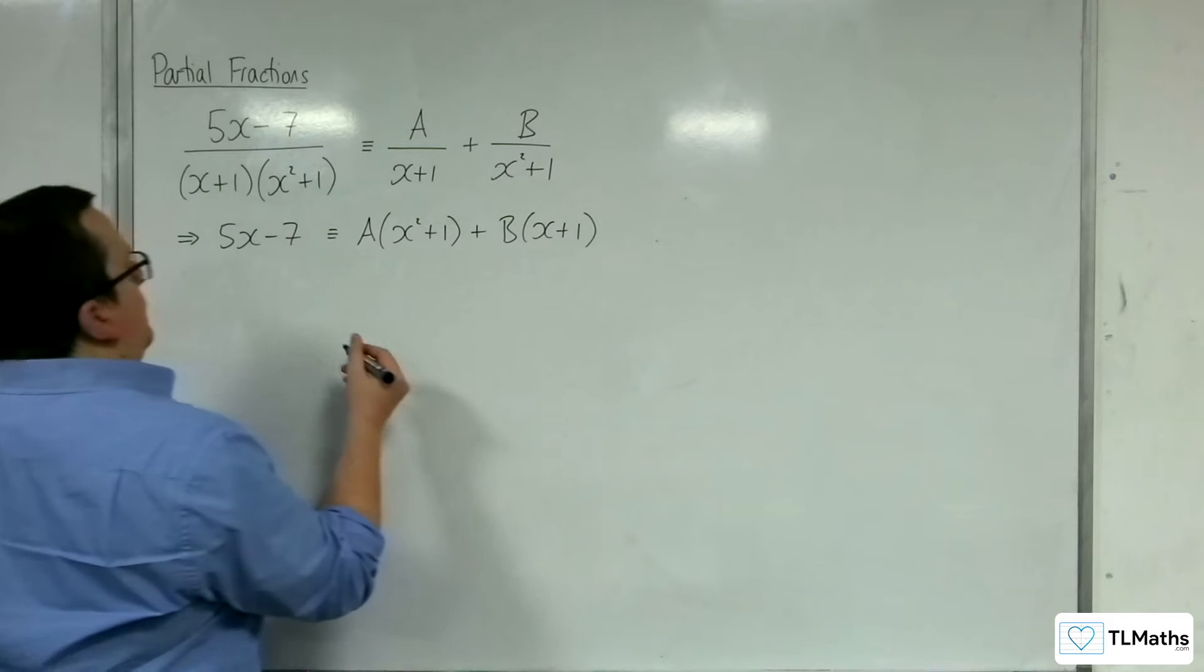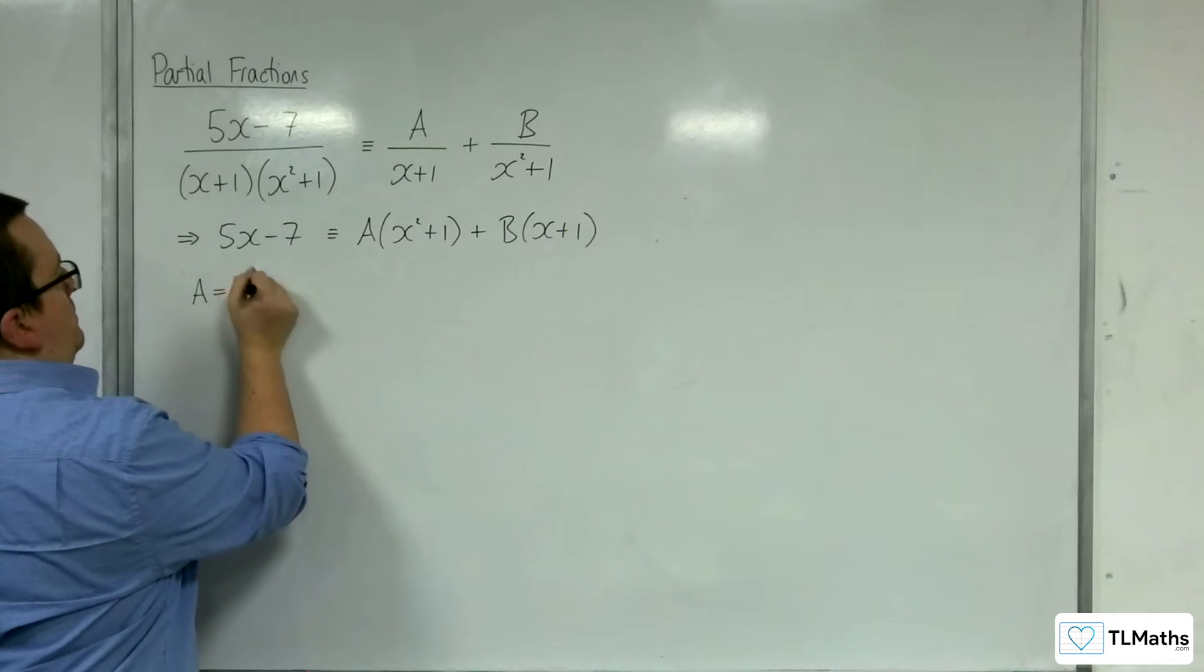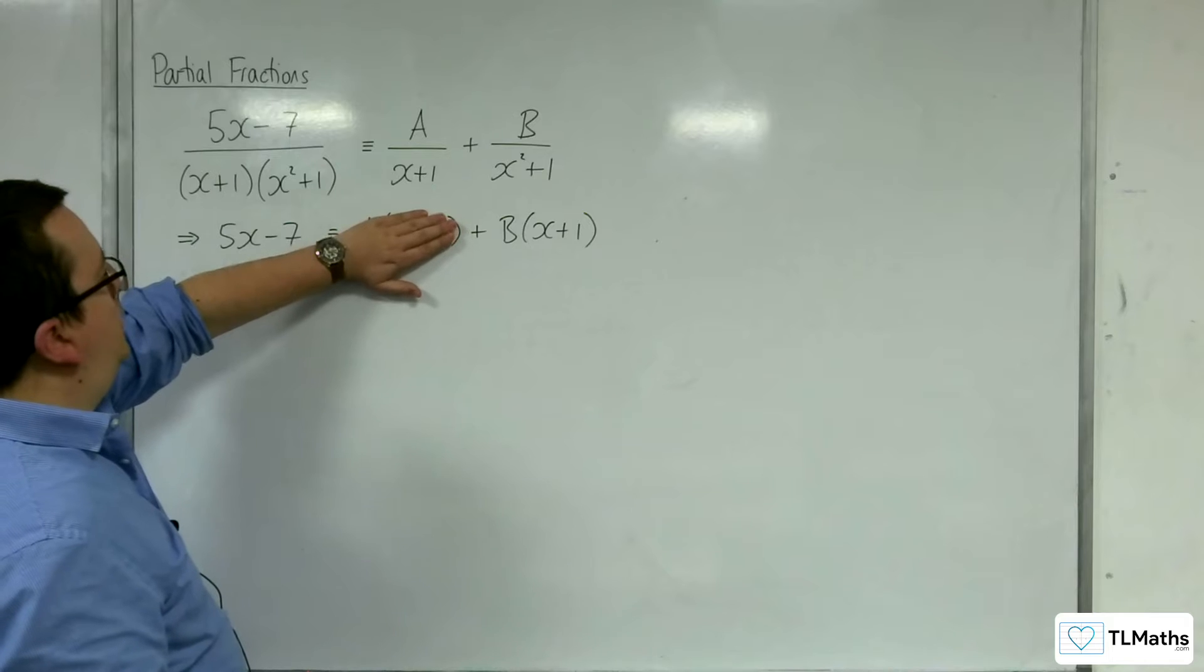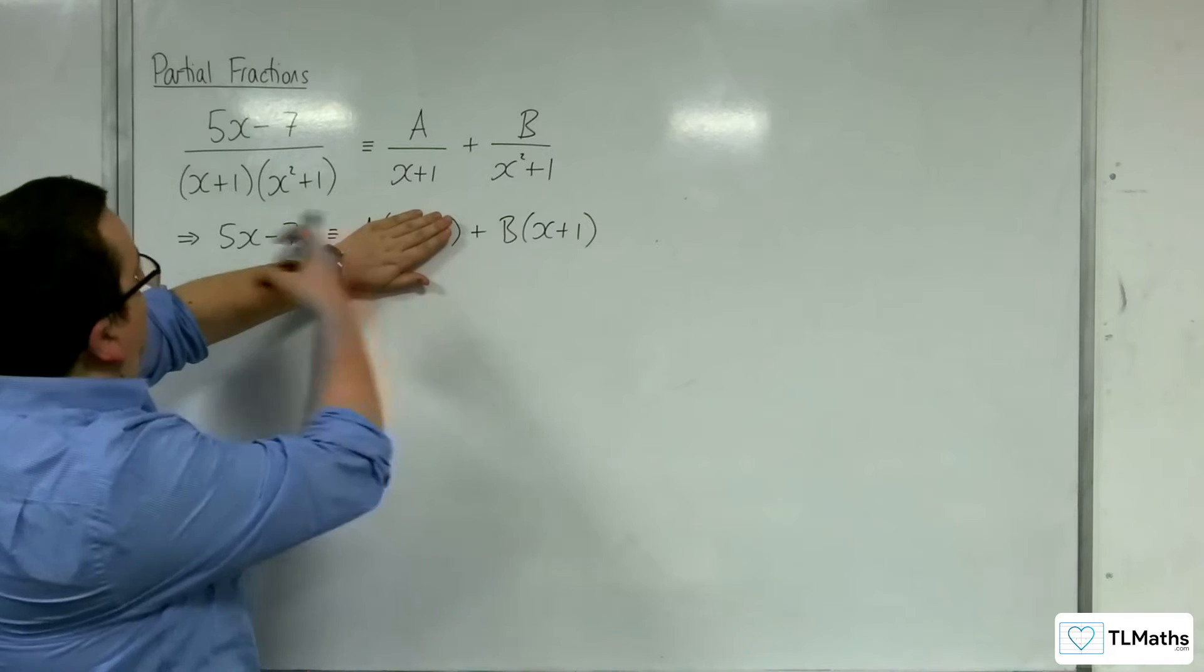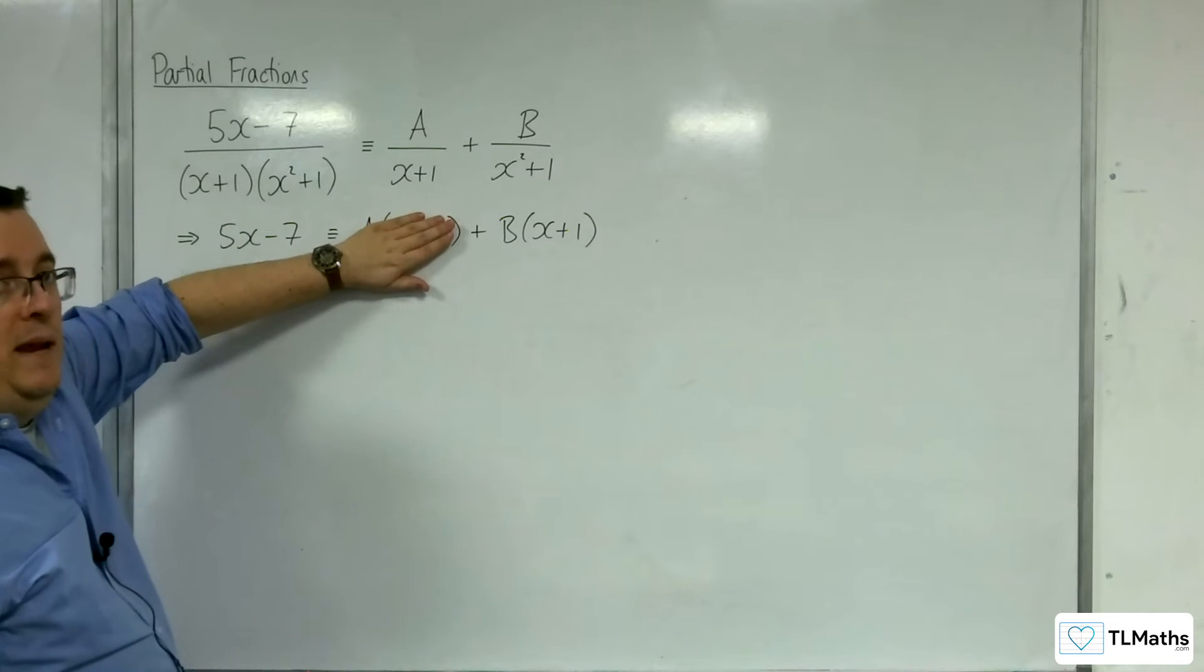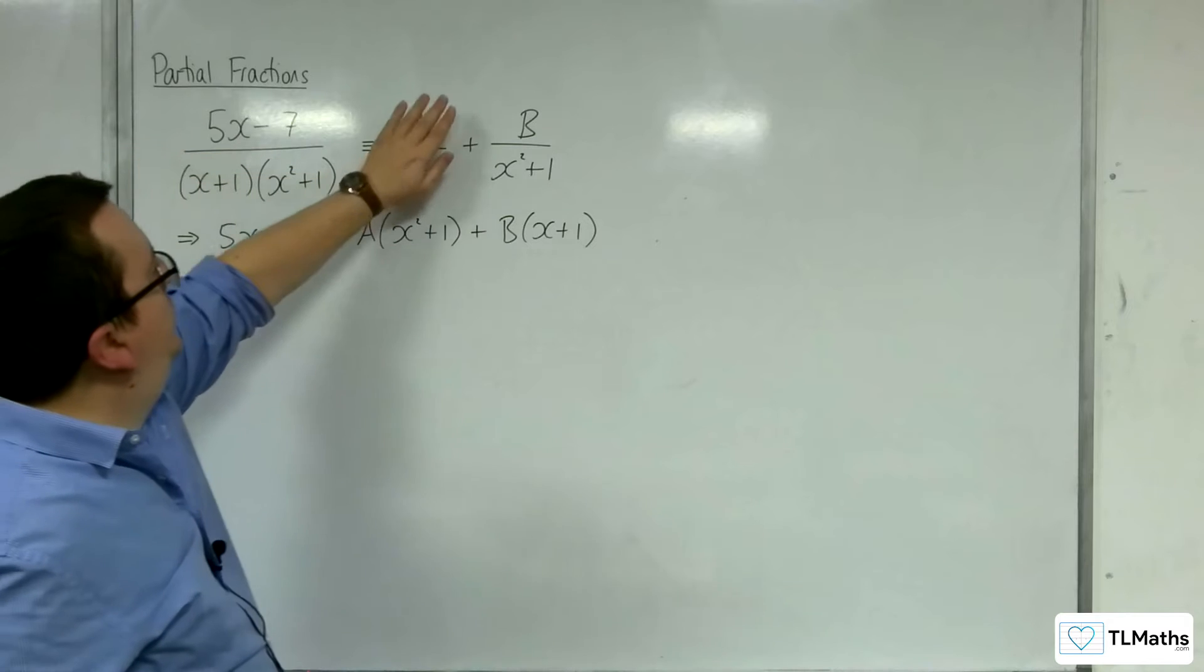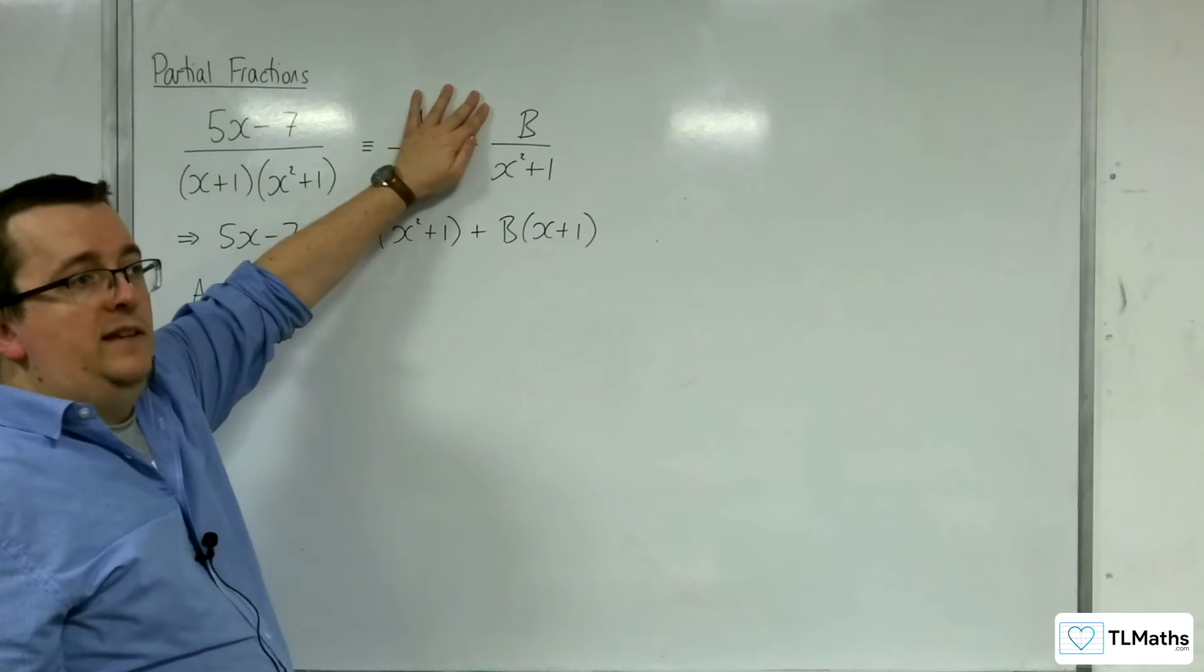So that's telling me that A has to be 0 in order to not get that quadratic term. So if A is 0, I then have 5x take away 7 has got to be the same as B lots of x plus 1. But x plus 1 isn't a factor of 5x minus 7. There is no value of B that will make that work.